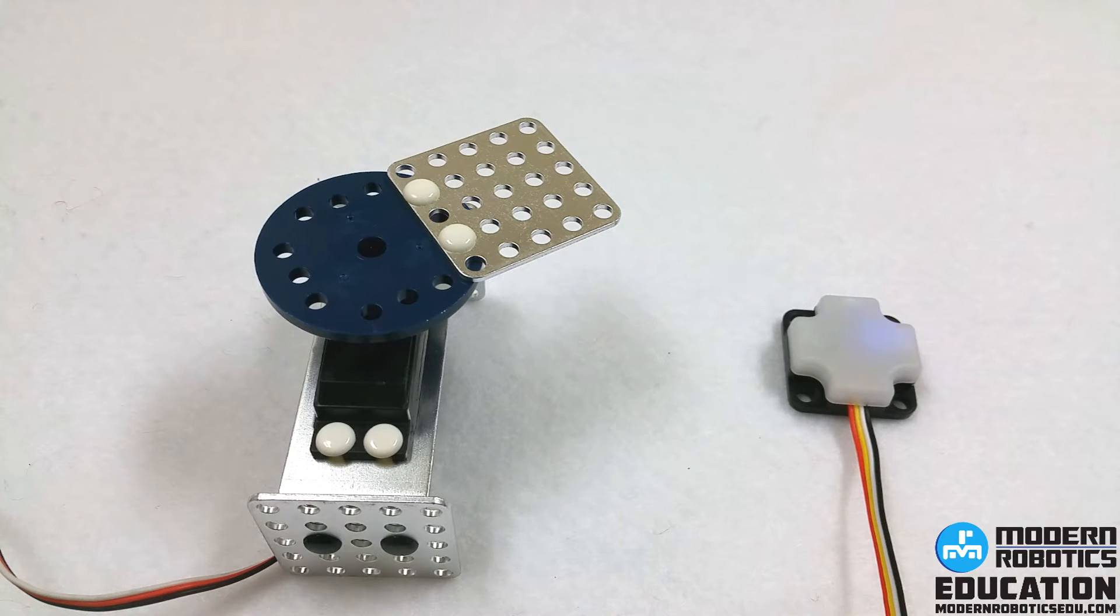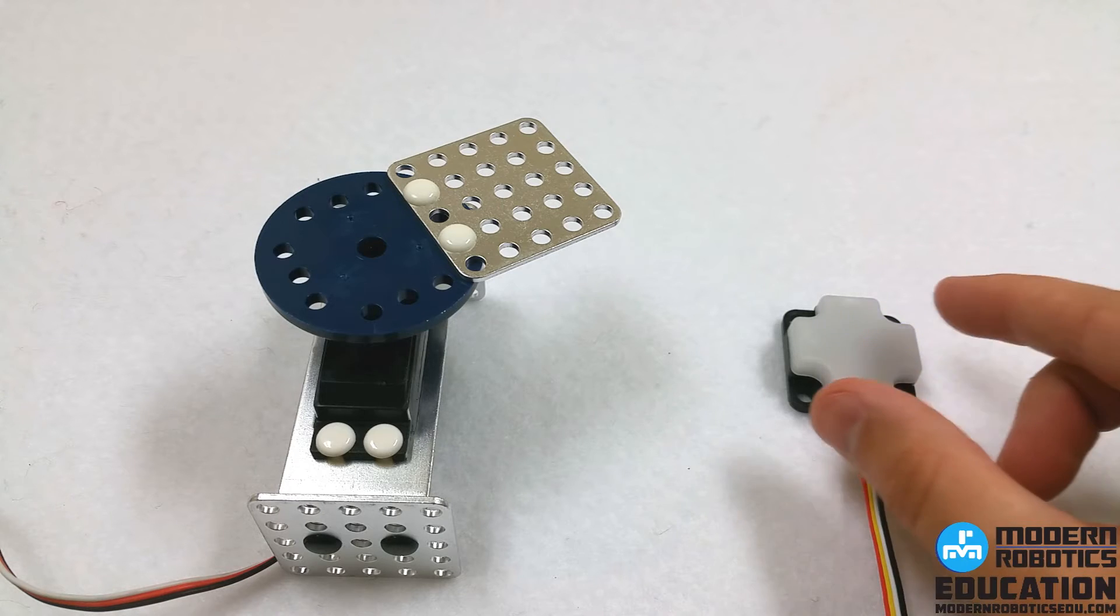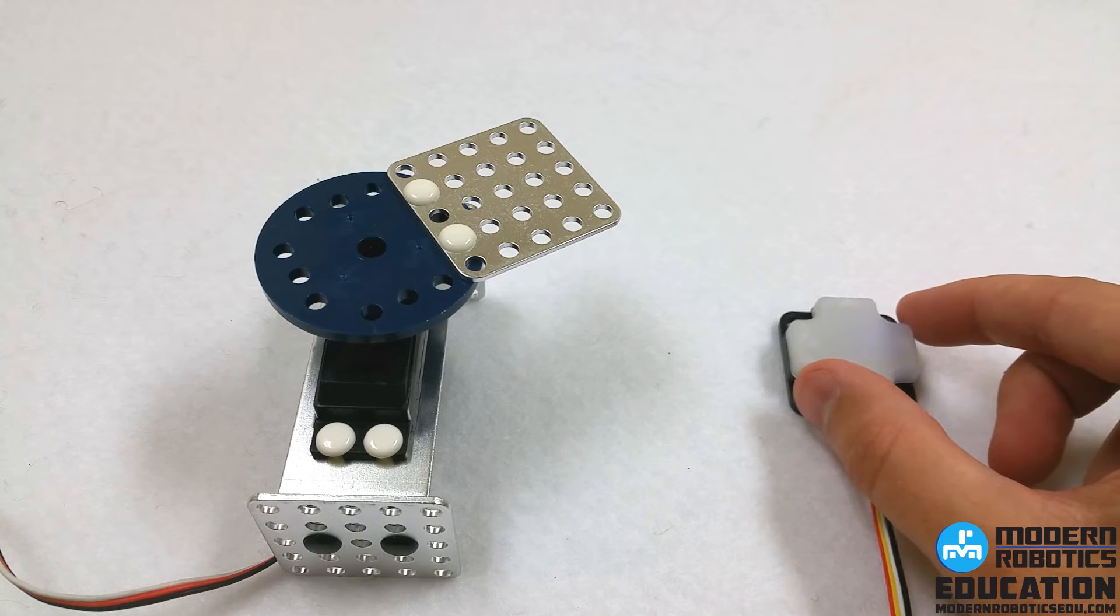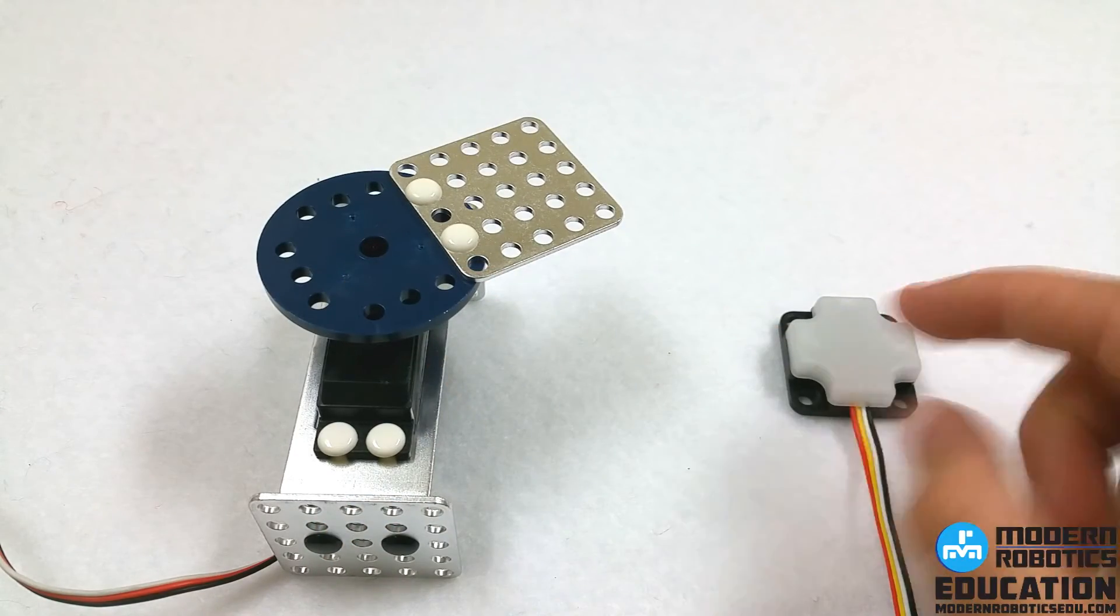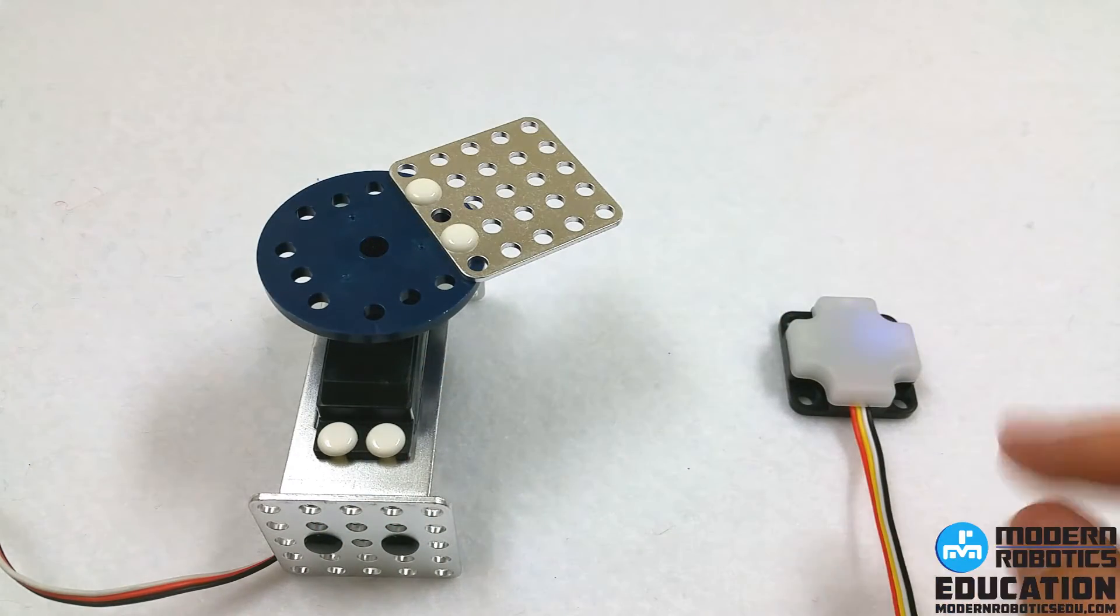The next thing we're going to do is make it so that we can take a gyro and turn it to move the servo. So as we turn the gyro, this will move in the same direction.